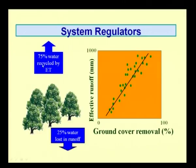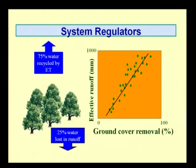The second threat is habitat fragmentation: when a whole habitat is broken into fragments, there is discontinuity in the diversity, making it another major threat. Regarding system regulators, 75 percent of water is recycled by evapotranspiration and 25 percent is lost in runoff. When groundwater is removed, effective runoff increases — there is a direct correlation between groundwater removal and runoff, affecting biodiversity through system regulation.